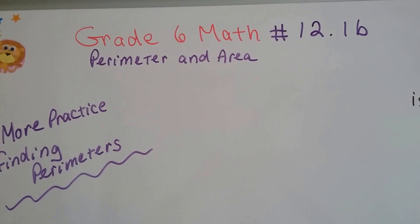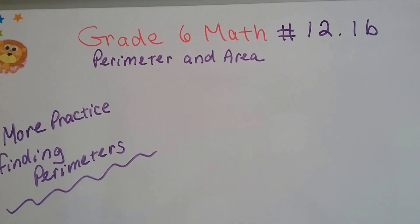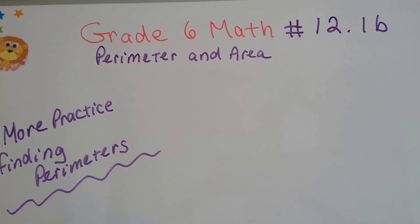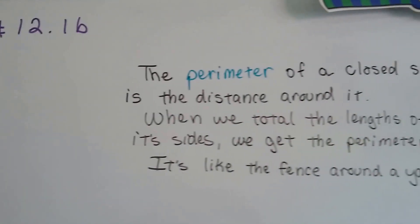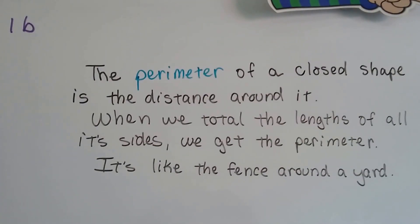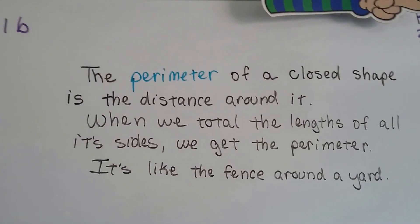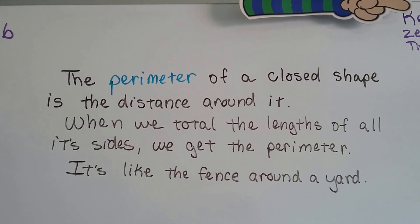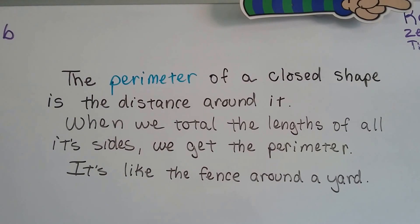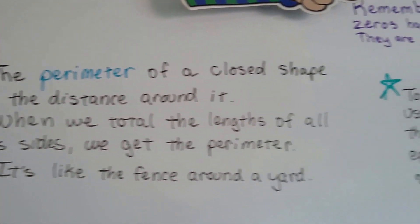Grade 6 math, number 12.1b — more practice finding perimeters. The perimeter of a closed shape is the distance around it. When we total the lengths of all of its sides, we get the perimeter. It's like the fence around a yard.